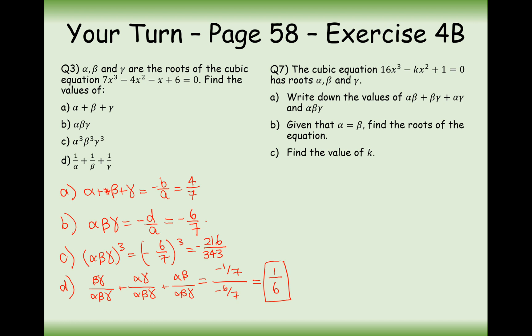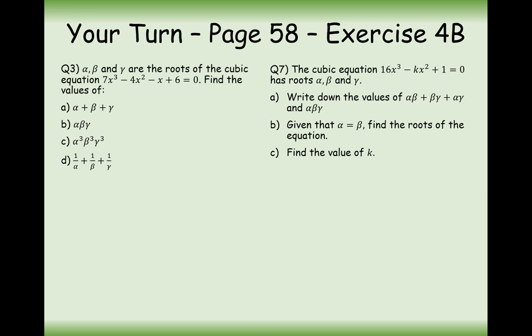Question 7: the cubic 16x³ − kx² + 0·x + 1 = 0 has roots α, β, γ. For part (a), the sum of the doubles: c/a = 0/16 = 0. For the triple: αβγ = −d/a = −1/16.